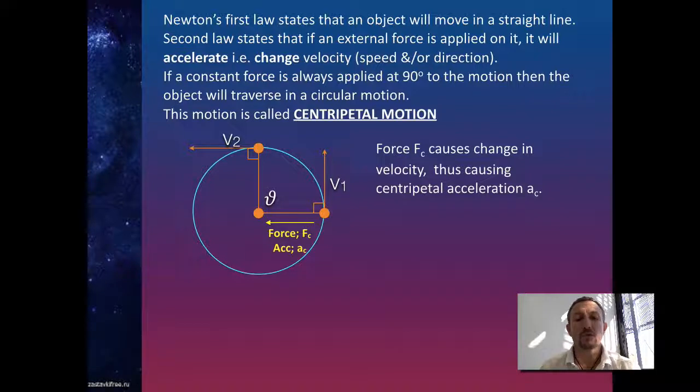If we apply a force, FC, which is the yellow arrow, perpendicular to its motion, the result is it will move in a direction, stay at a constant speed, but move in a direction, V2. So as a result, we've now produced our circular motion.